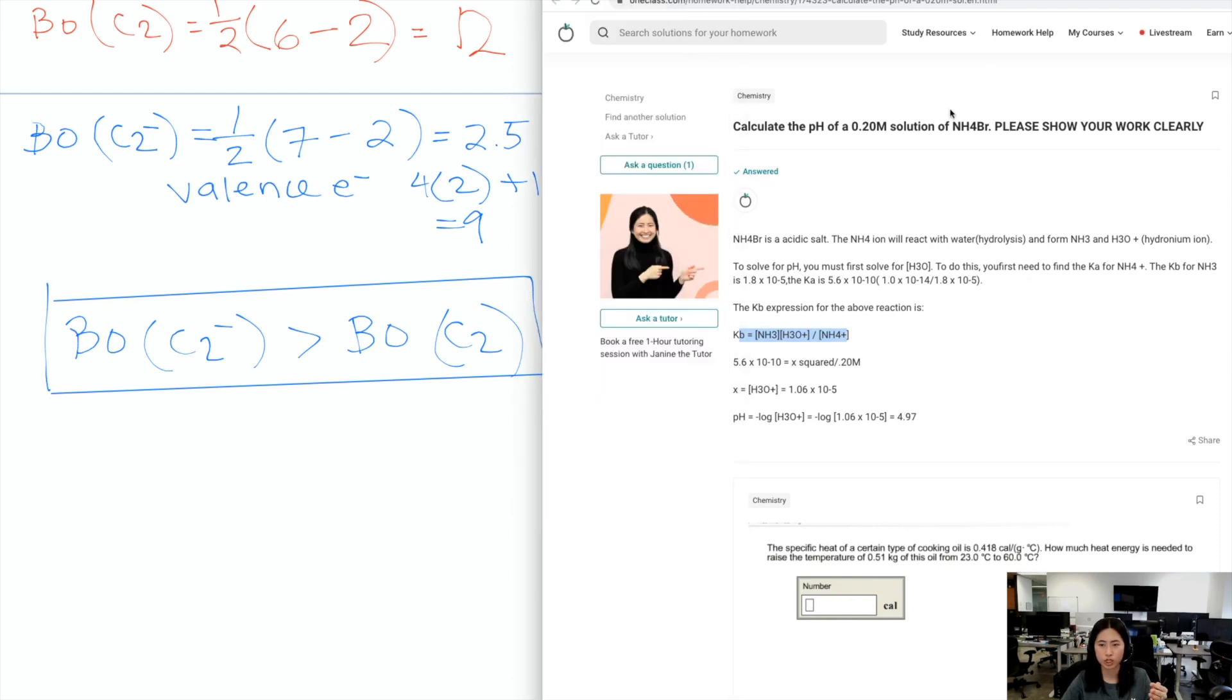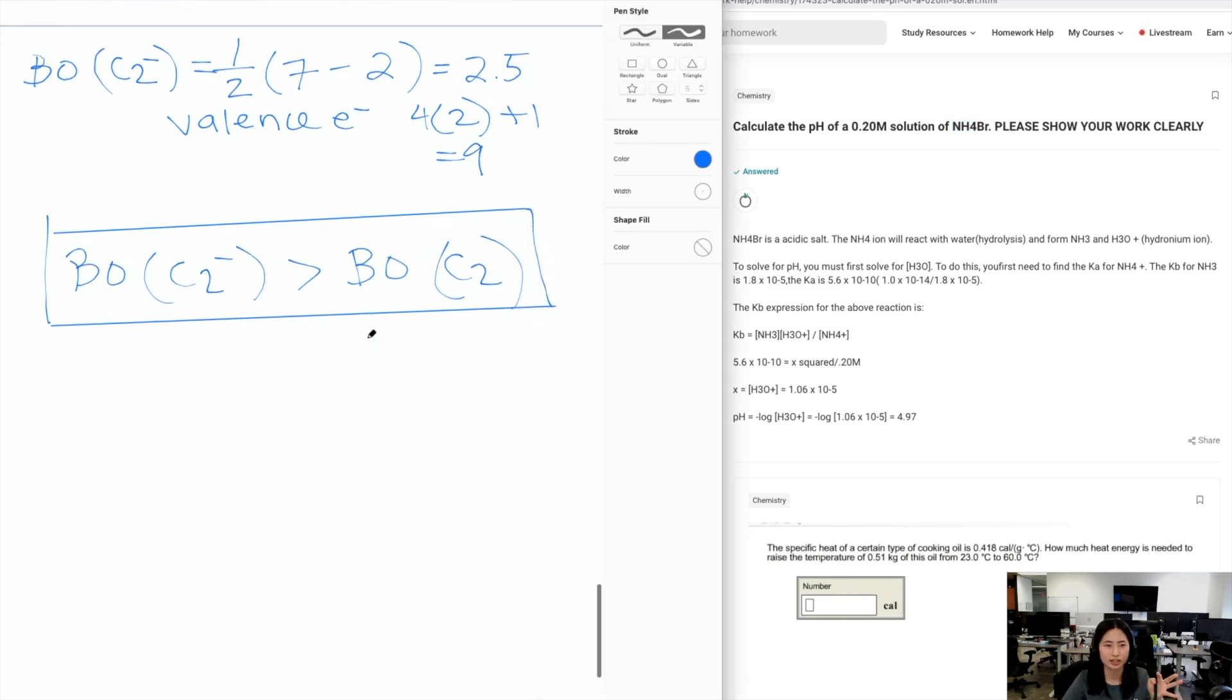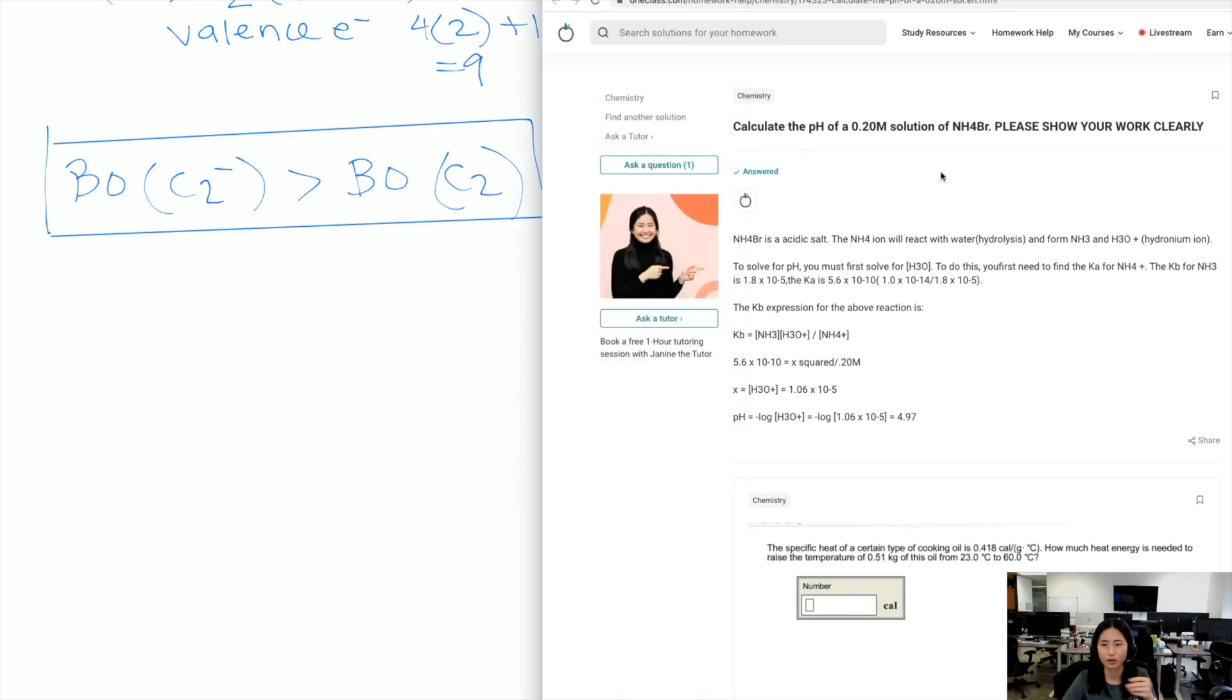So for this question, first of all, you need to be given your Ka for NH4+, or your Kb for NH3, so either one is fine. And then the way that you're supposed to solve it is dependent on whether you're starting off with NH4+, does that make sense? So bear with me. I know we still have like five minutes left, but I want to get through this question, so let's just deal with this. We have to find the pH of NH4Br.